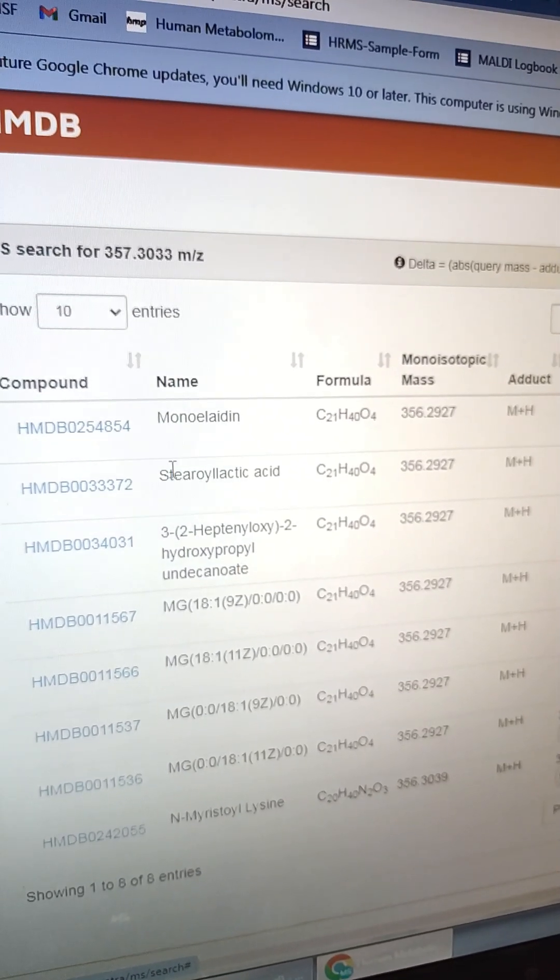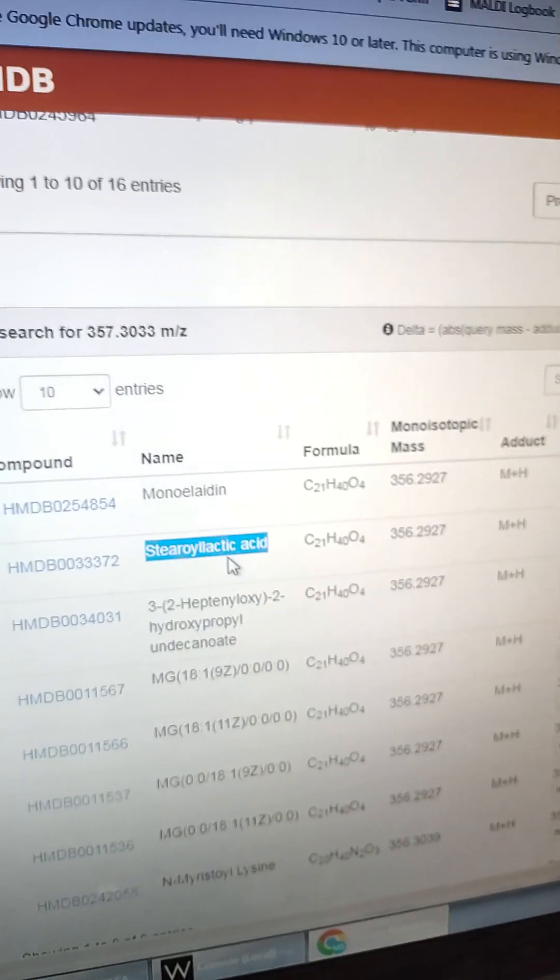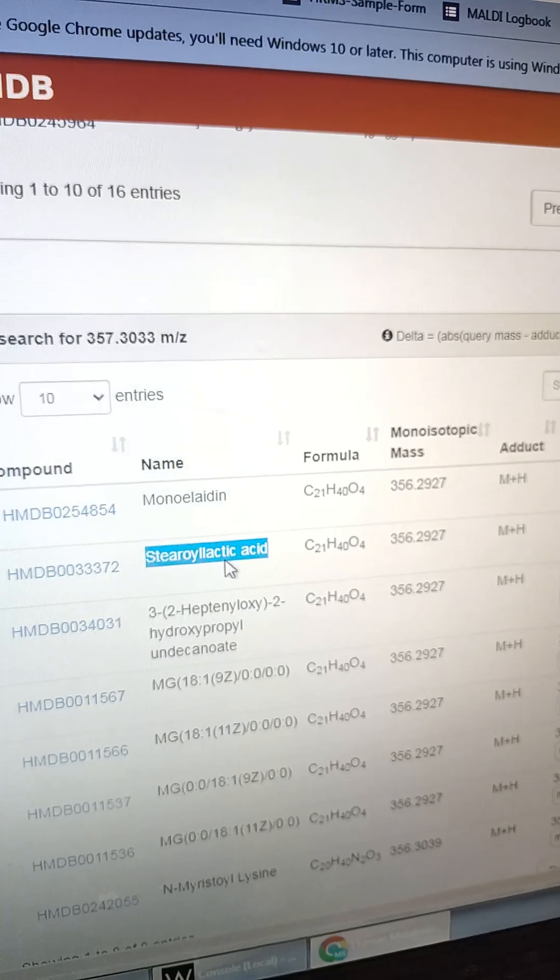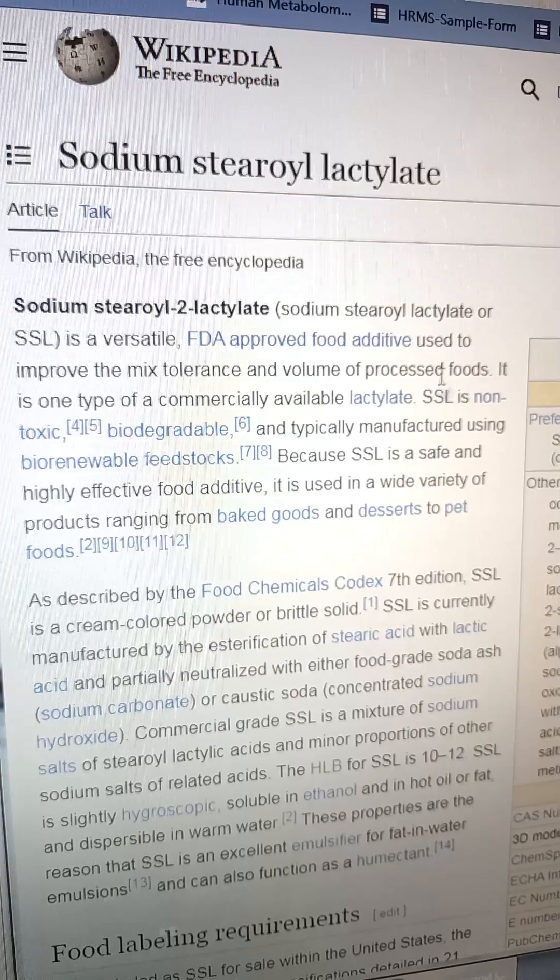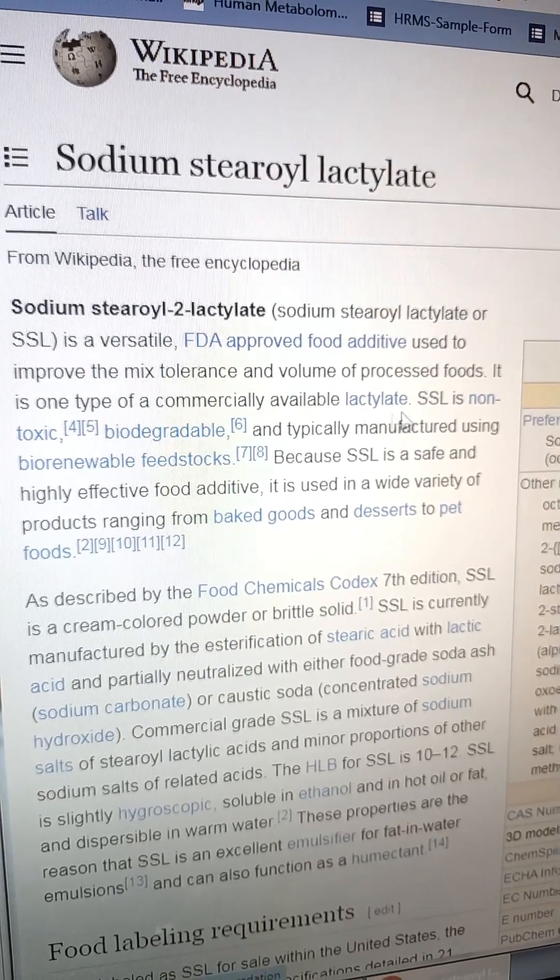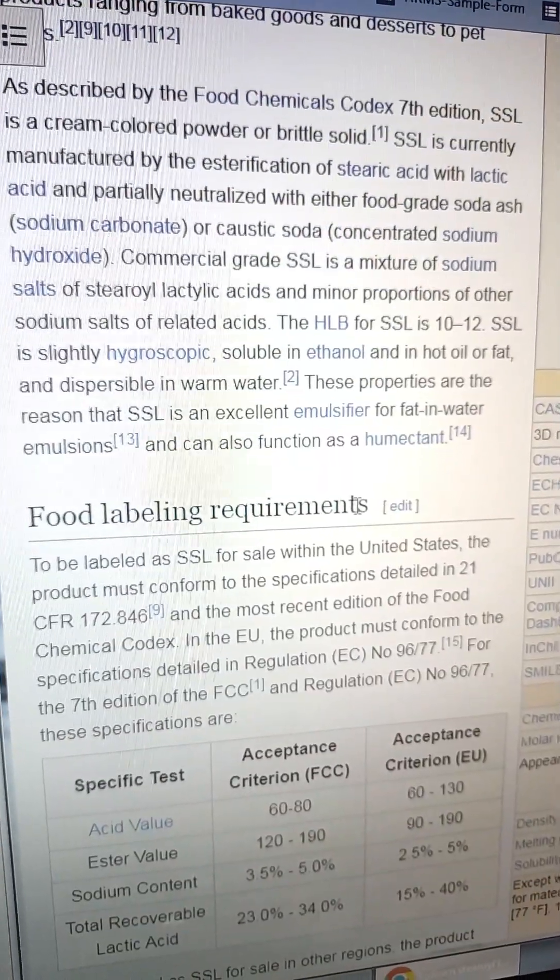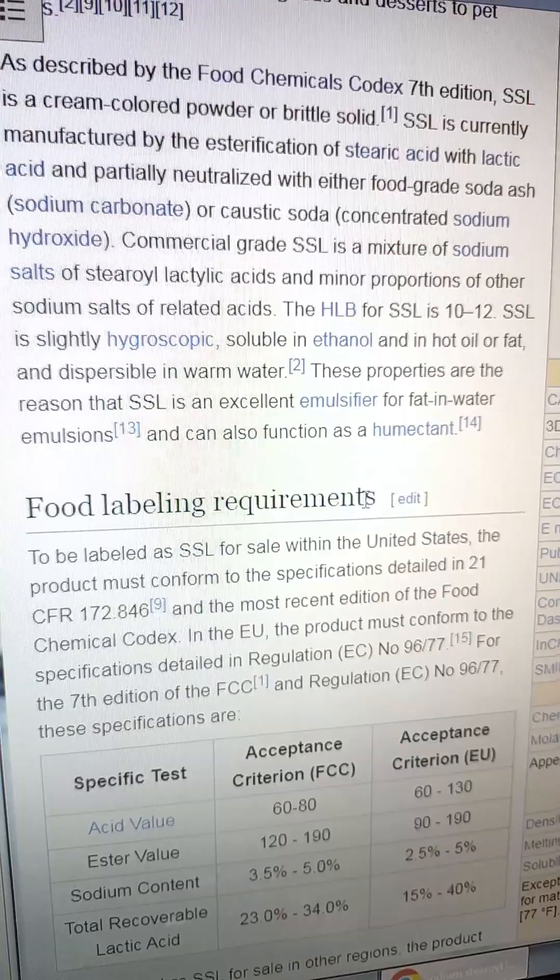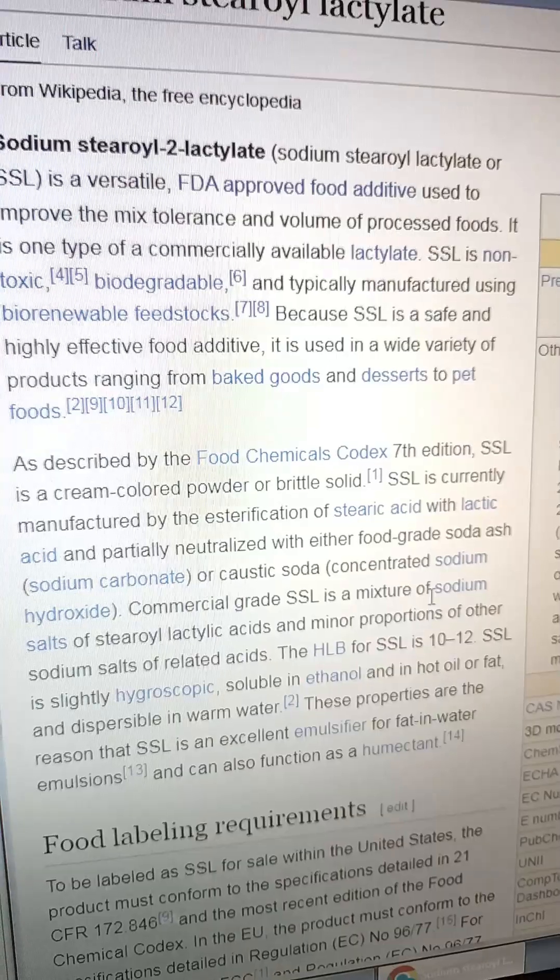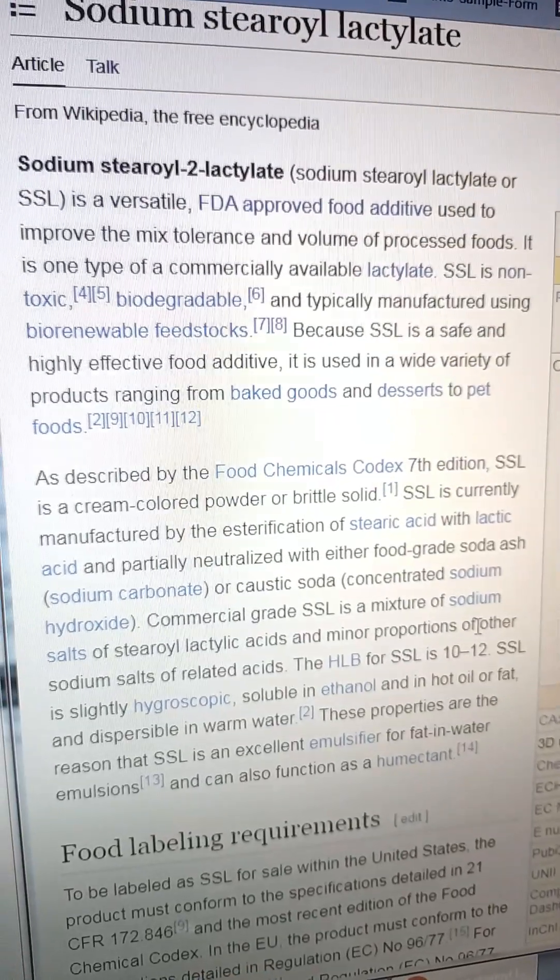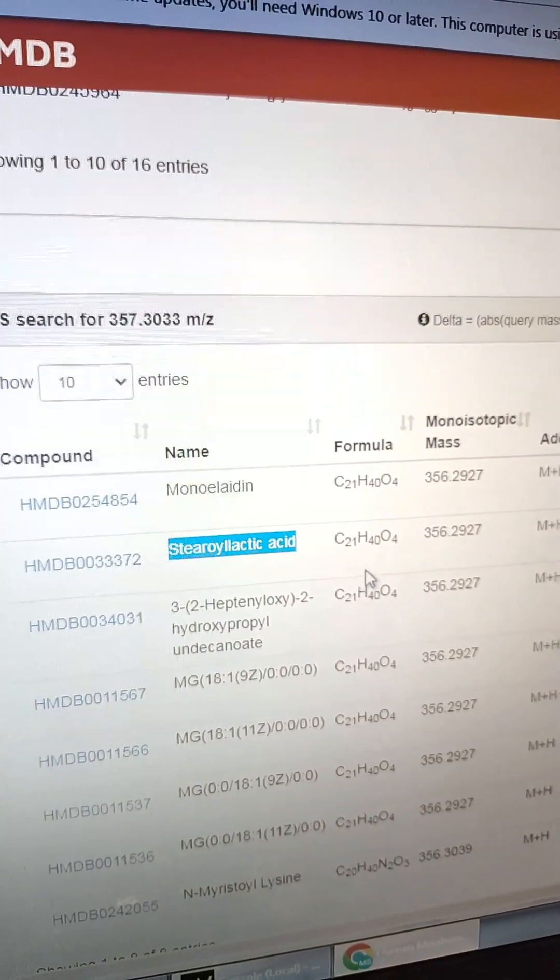So then 357, look who that is. That is the stearyl lactic acid, the SSL. That is that molecule I was talking about. SSL is food additive from the FDA. And it is used as kind of a flow agent, really common. I don't think you're required to label it. We'll use some MS-MS and confirm that that guy's there. But I'm pretty confident just from the hit here, that's what we got going on.